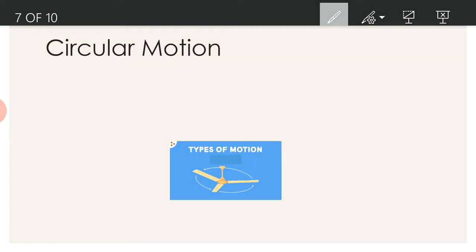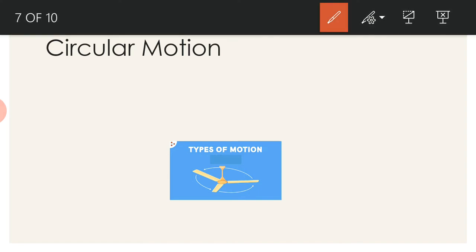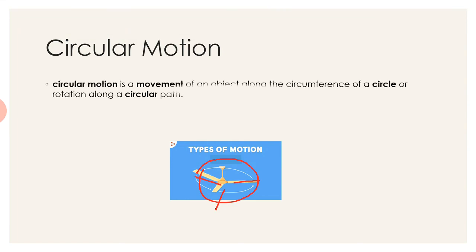The next is circular motion. Here you can see an image. In this image, we can see that the wings of the fan are following a circular path. Is it a curvilinear motion? No, it is not a curvilinear motion. Instead, it is a circular motion.